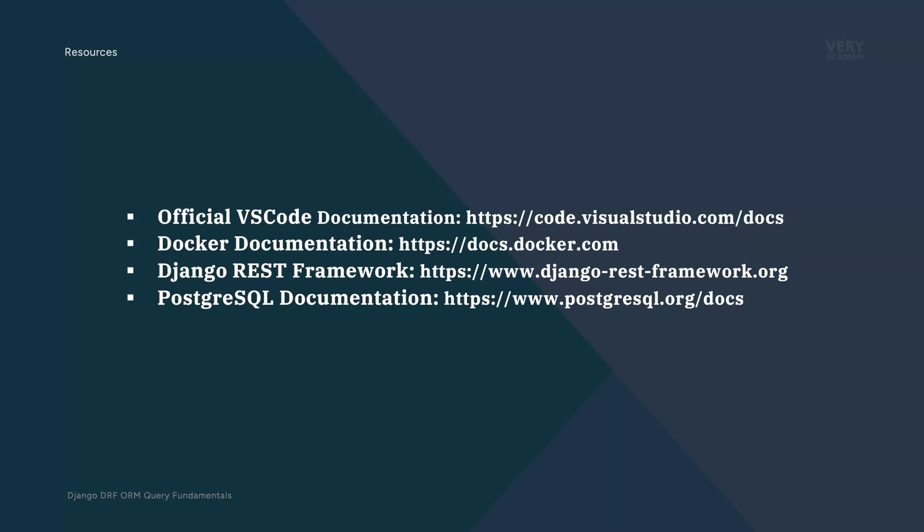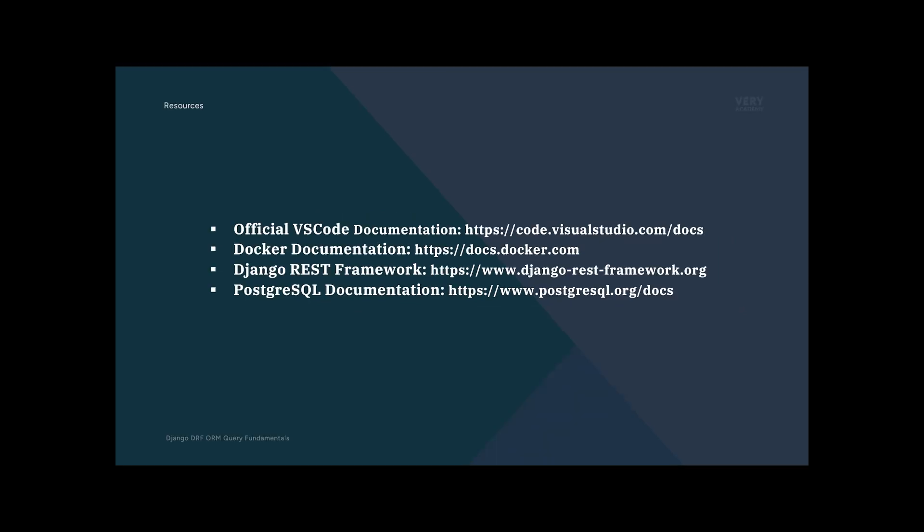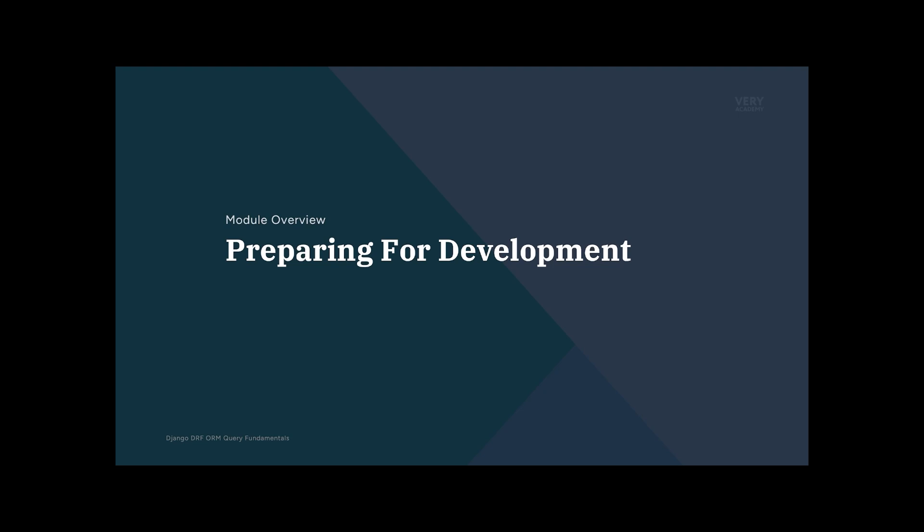Throughout this course, the primary resource you can access is the source code that we generate in each module. To download the source code for any module, just head over to the first tutorial, the module primer. From there, you'll be able to download the source code. If you are familiar with Docker and Visual Studio Code, then head over to the end of this tutorial or check out the source code, and make sure you are familiar with the code we're using to set up the Django Postgres SQL service.